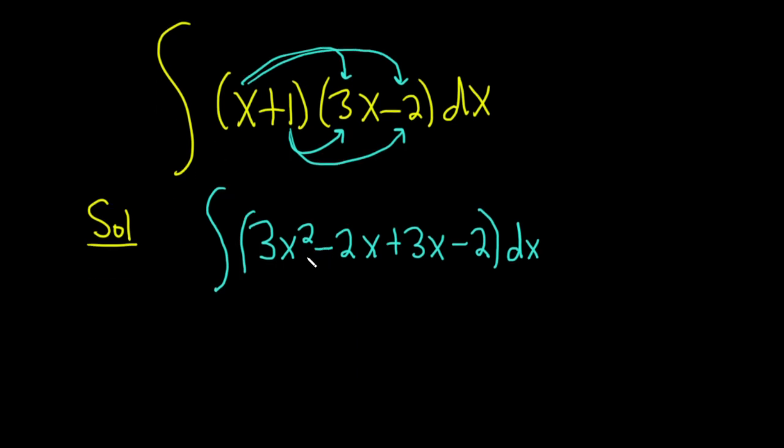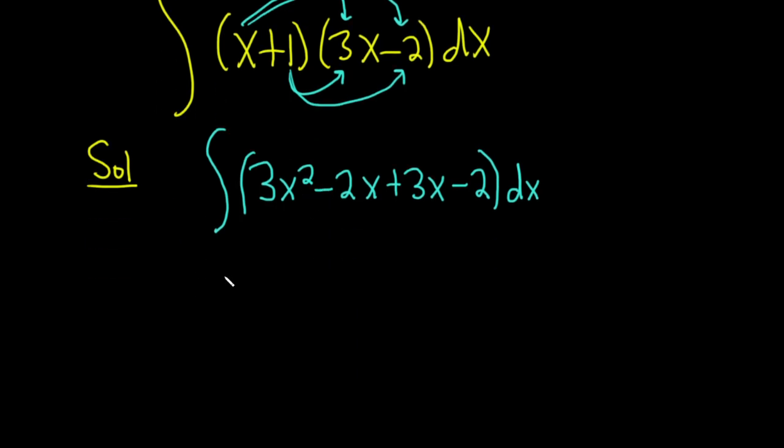Let's see if we can combine like terms. I think we can. So this is the indefinite integral of 3x². And then -2x plus 3x is simply x. We can combine these. And then we still have the -2, dx.